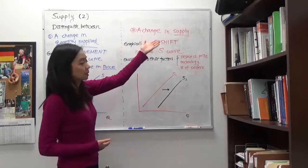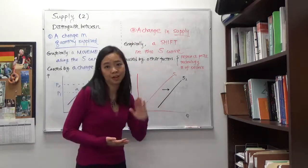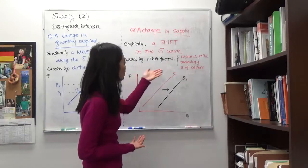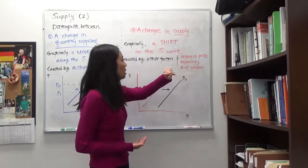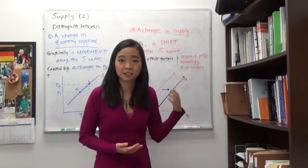And a change in supply is different. A change in supply is caused by other factors. So it could be caused by a change in resource price, or technology, or number of sellers, which we will talk about in the next class.